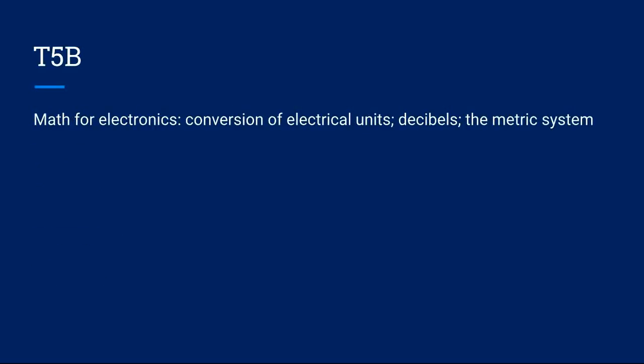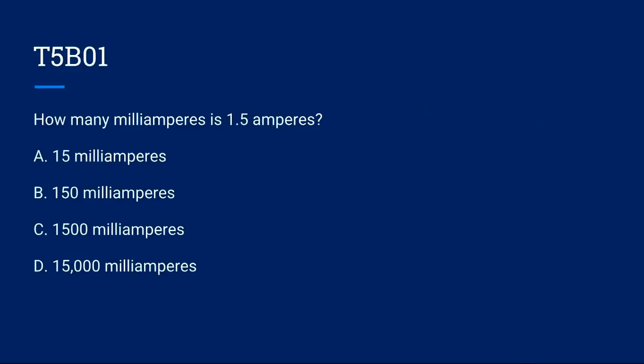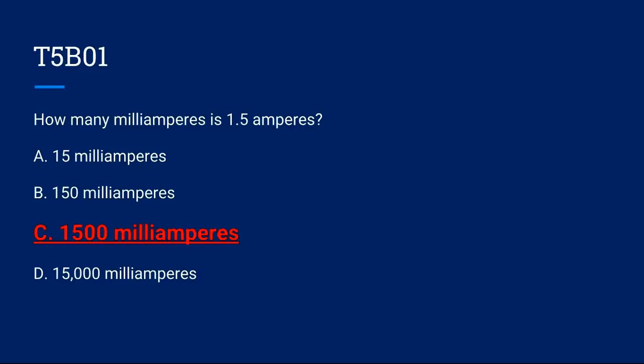T5B. Math for Electronics, Conversion of Electrical Units, Decibels, and the Metric System. T5B01, how many milliamperes is 1.5 amperes? A. 15 milliamperes. B. 150 milliamperes. C. 1,500 milliamperes. Or D. 15,000 milliamperes. The correct answer is C. 1,500 milliamperes.